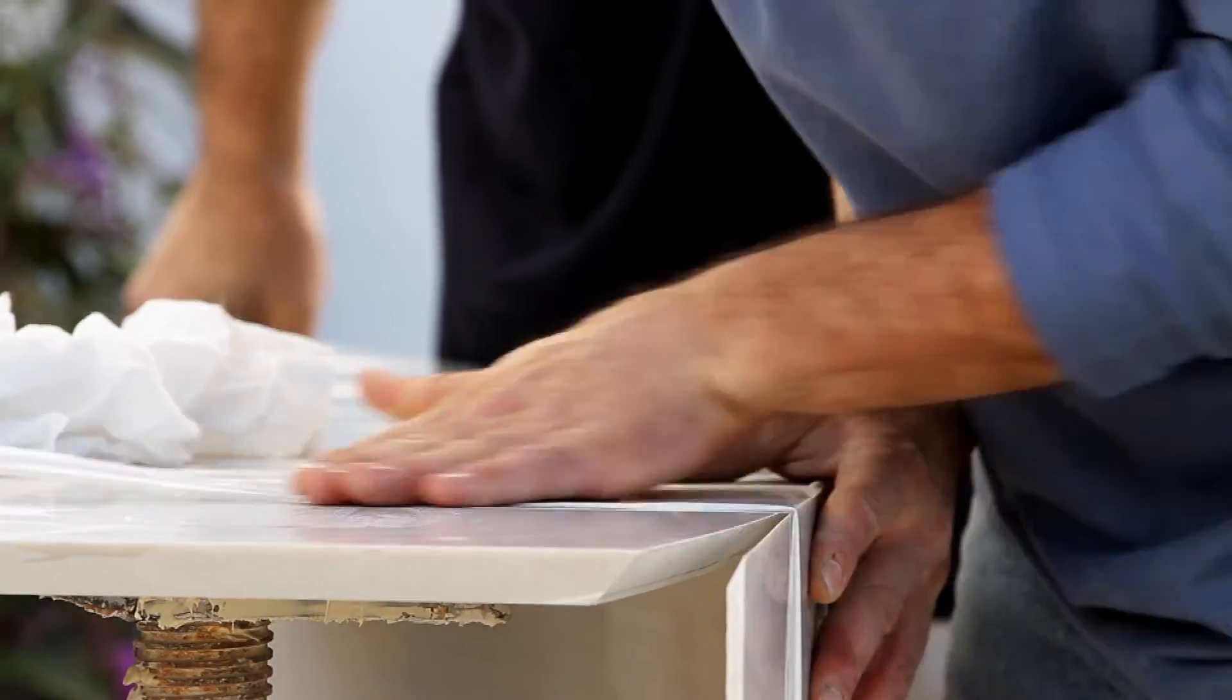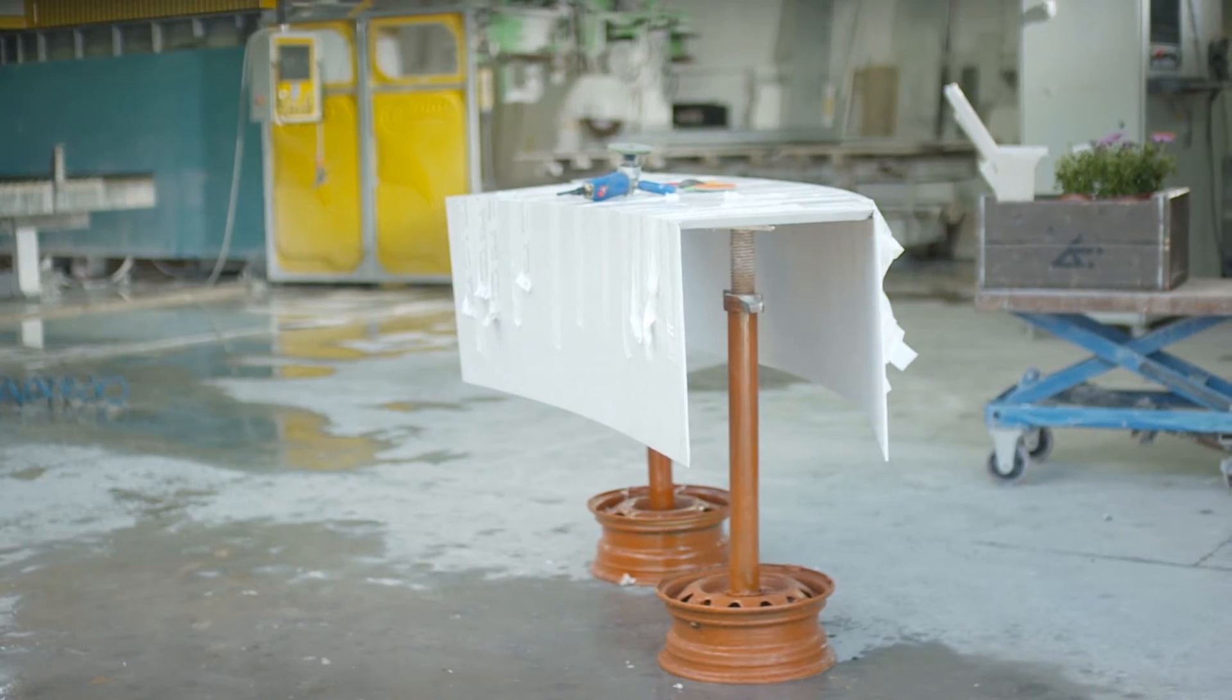Now, repeat exactly the same process for the other side of the coffee table. You will then have a table that is closed on two sides.